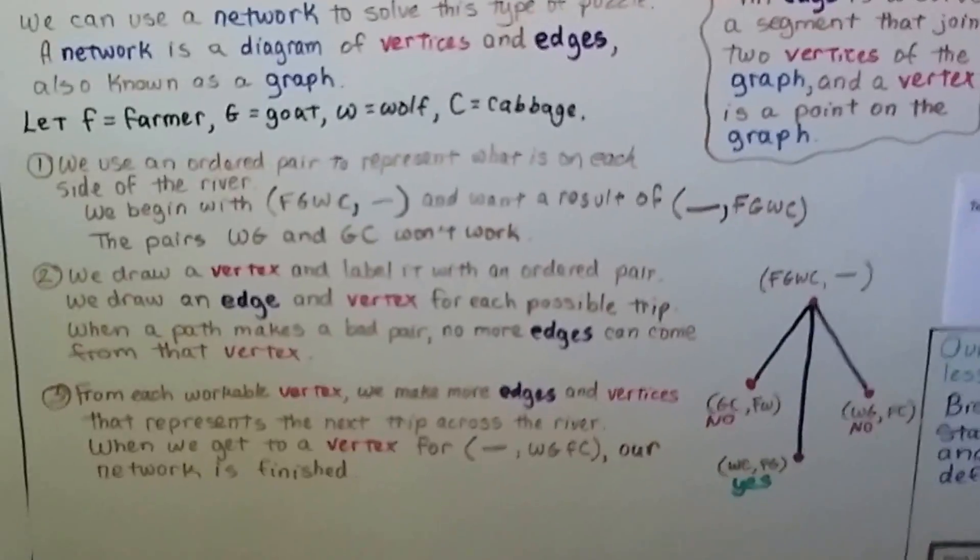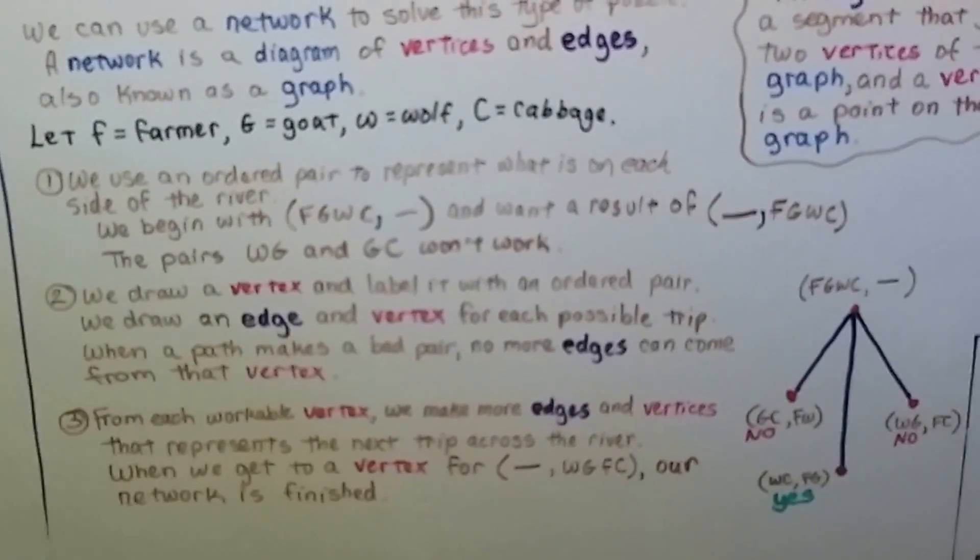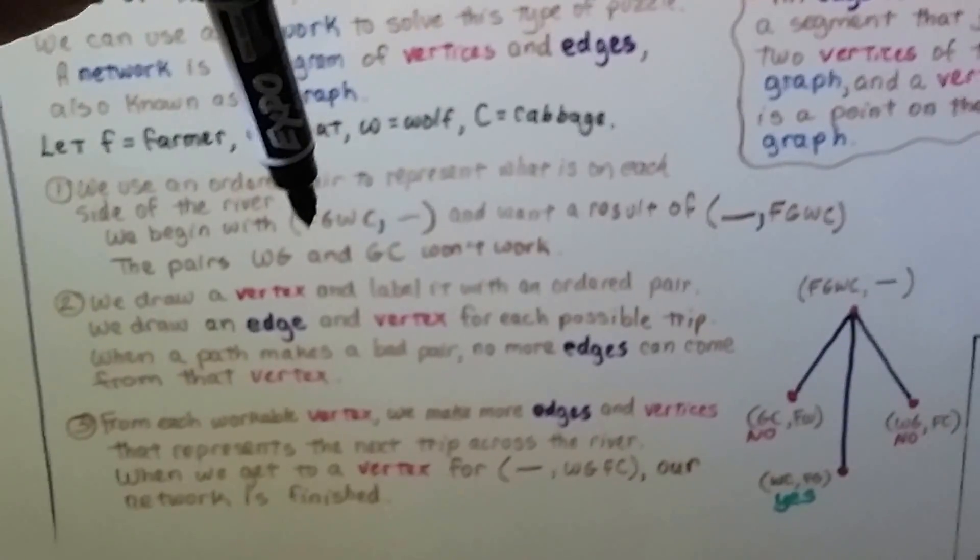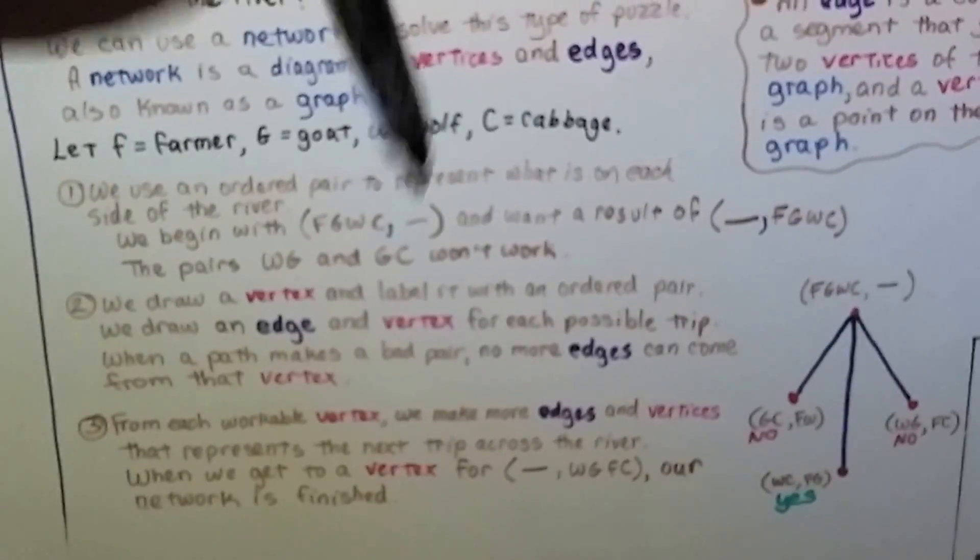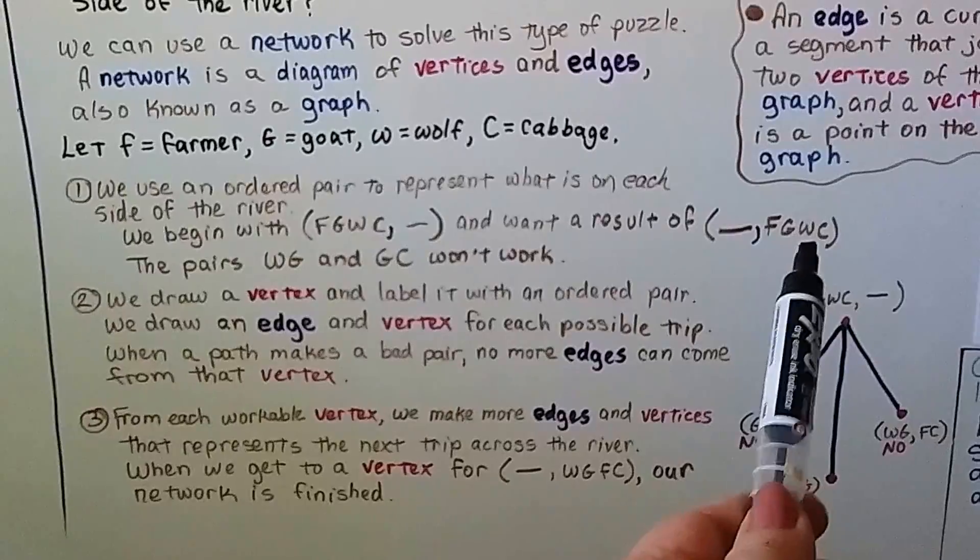We're going to use an ordered pair to represent what is on each side of the river. We're going to begin with on the left side of the river is the farmer, the goat, the wolf, and the cabbage, and there's nothing on the right side. We want a result of having nothing on the left side and everything being on the right side.